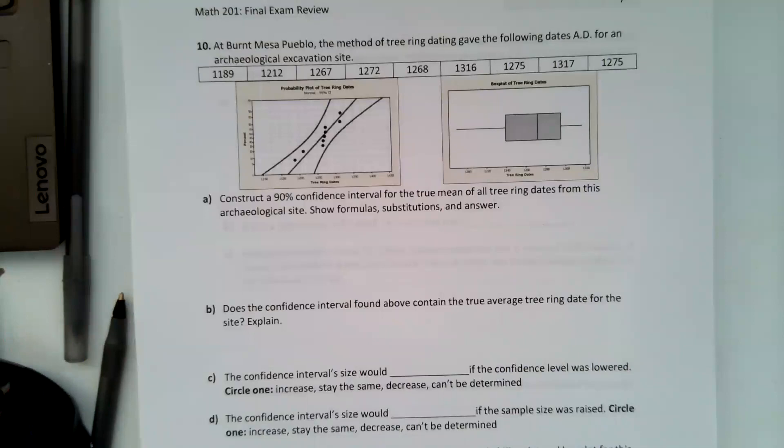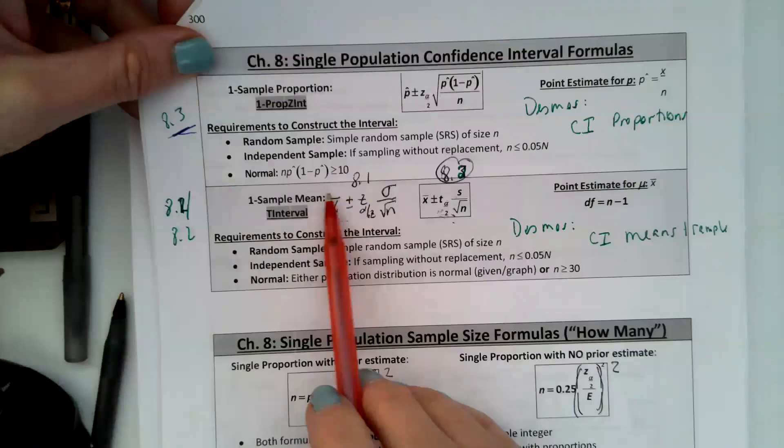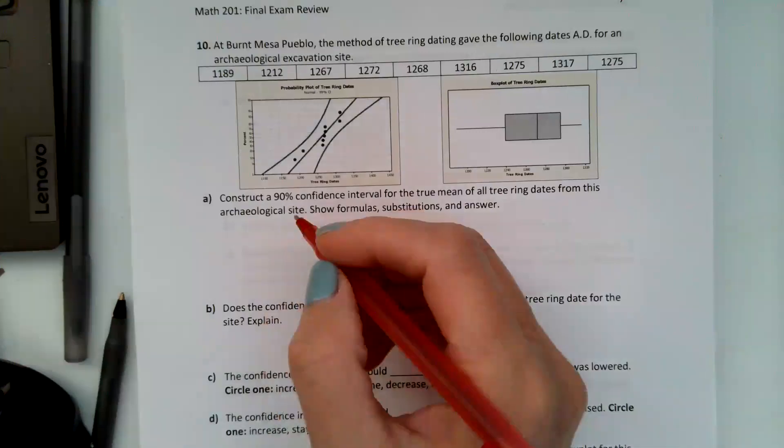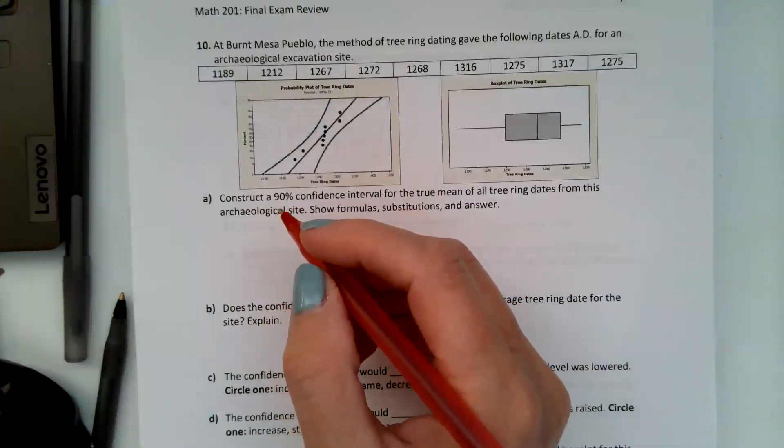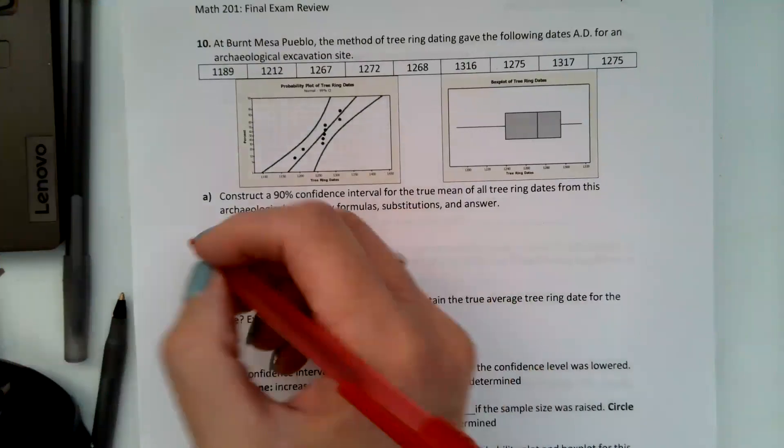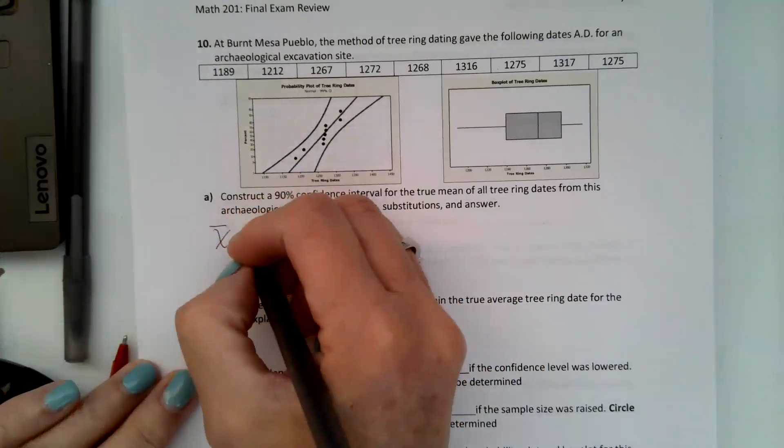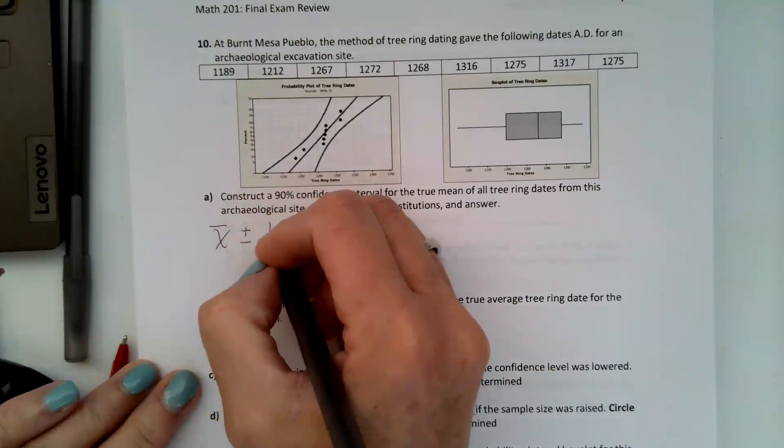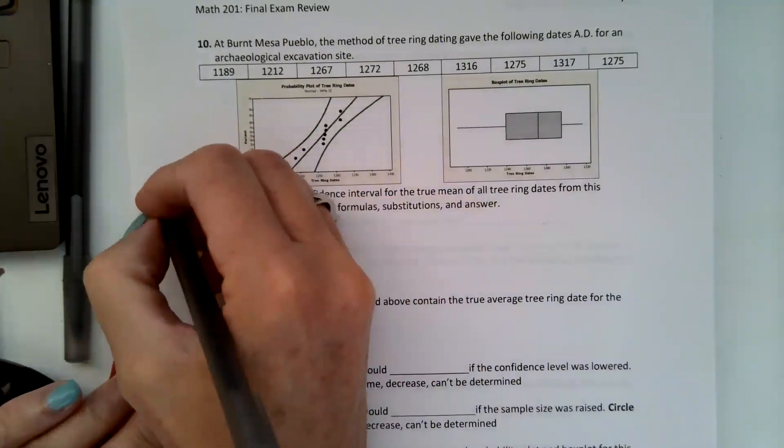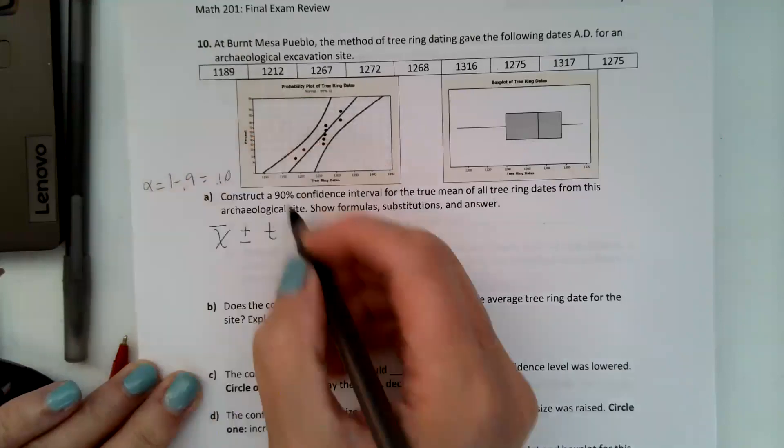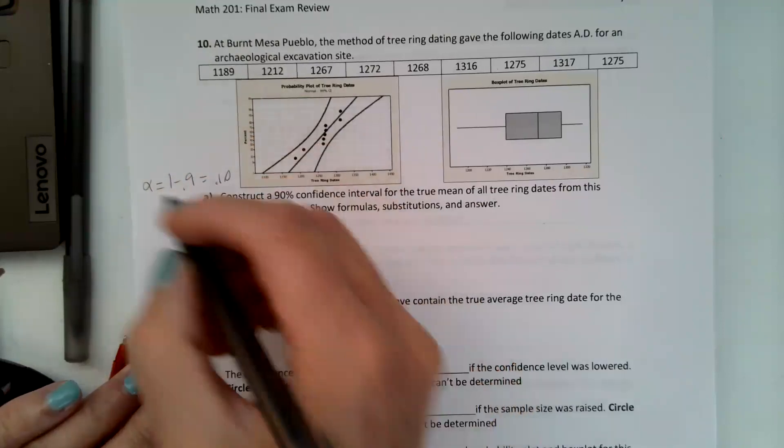We're looking for the confidence intervals for chapter eight because we have one sample mean. We're going to be using this one, and we don't know the population standard deviation so we're going to be using the t distribution. So we're going to be using x̄ the sample mean plus or minus the t. Alpha is equal to one minus 0.9 or 0.1 because we want a 90% confidence.